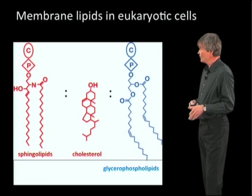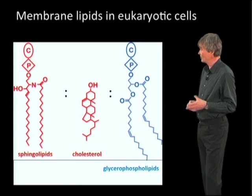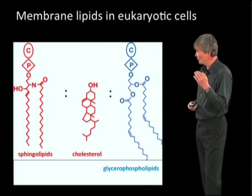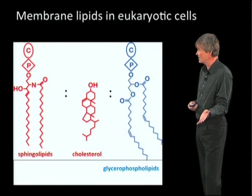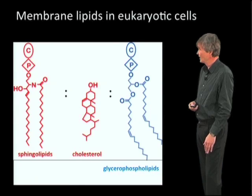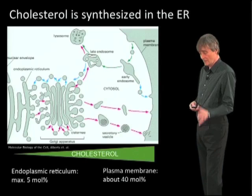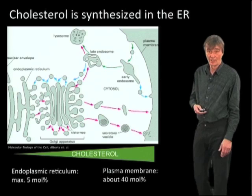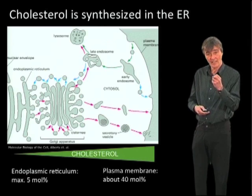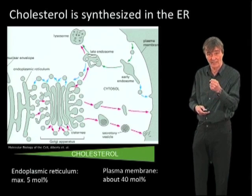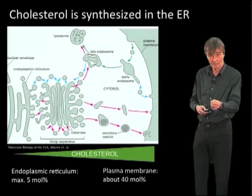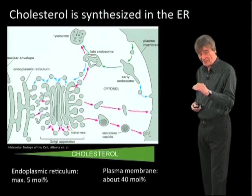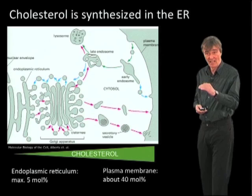If you look at the three major groups — the sphingolipid family, the glycerophospholipids, and cholesterol — let's start with cholesterol. Cholesterol is made in the endoplasmic reticulum, but the concentration there is kept very low.